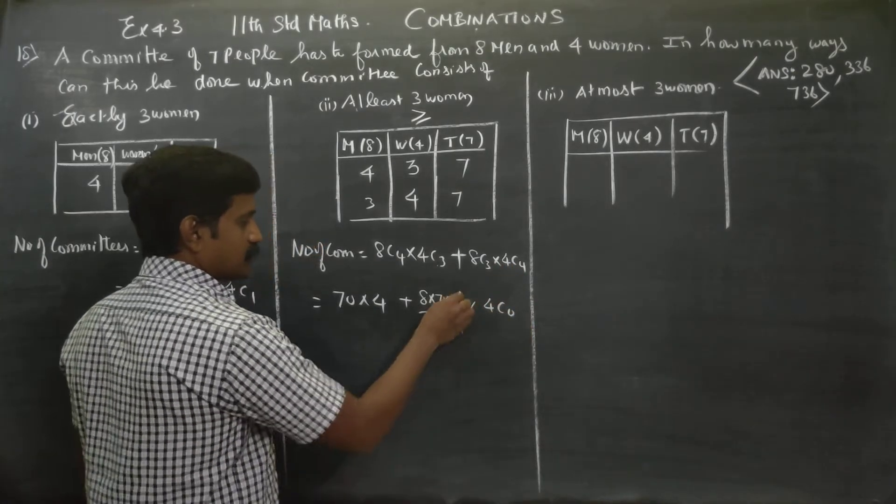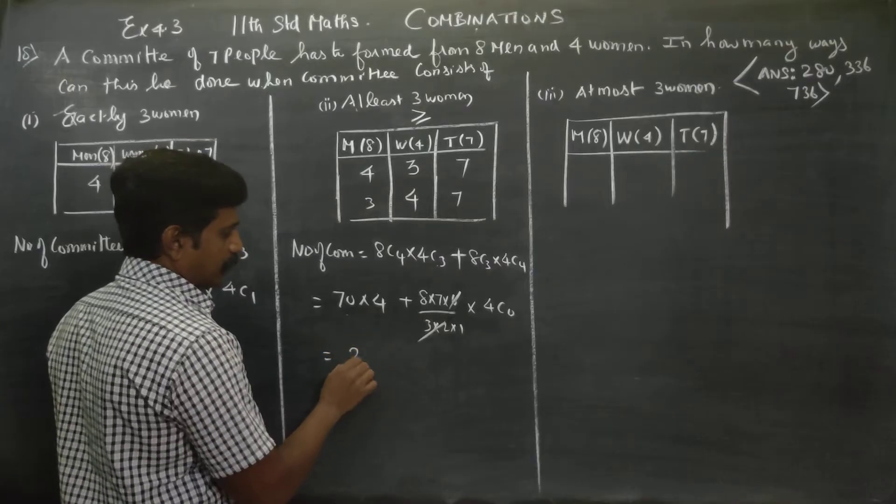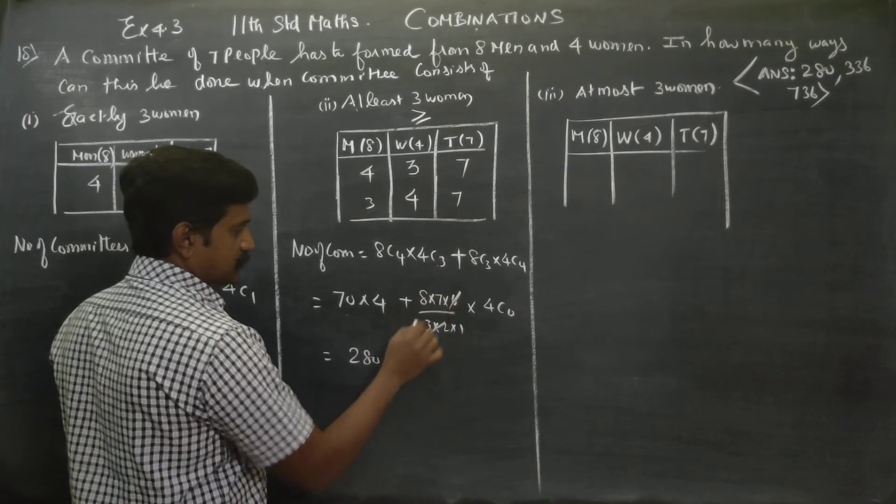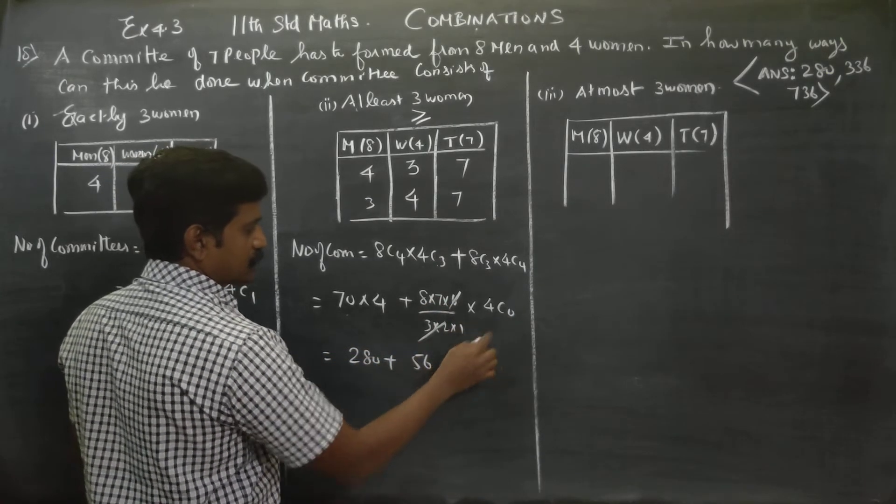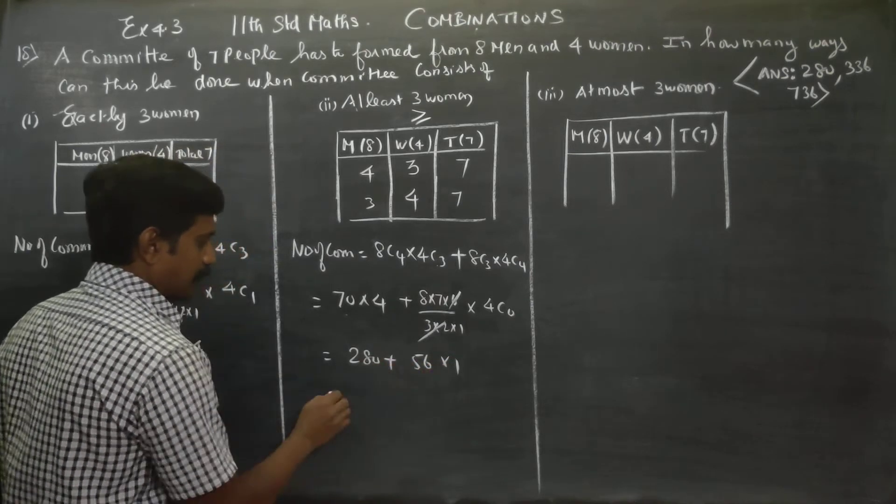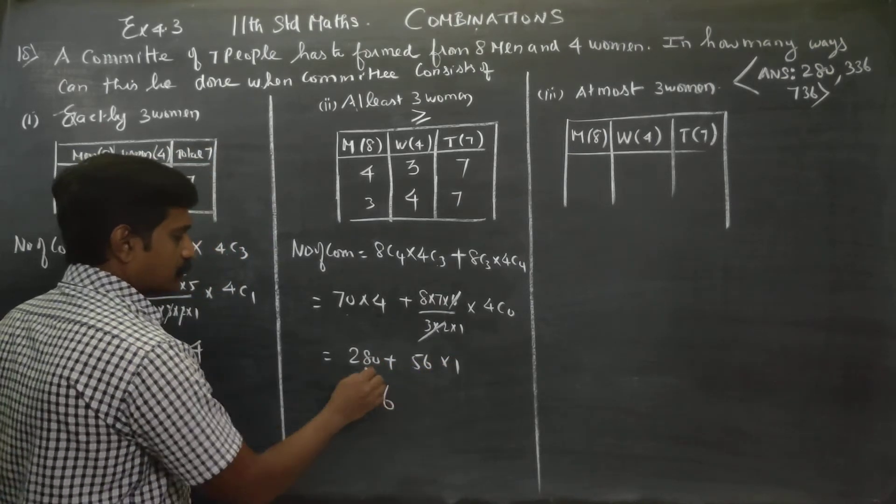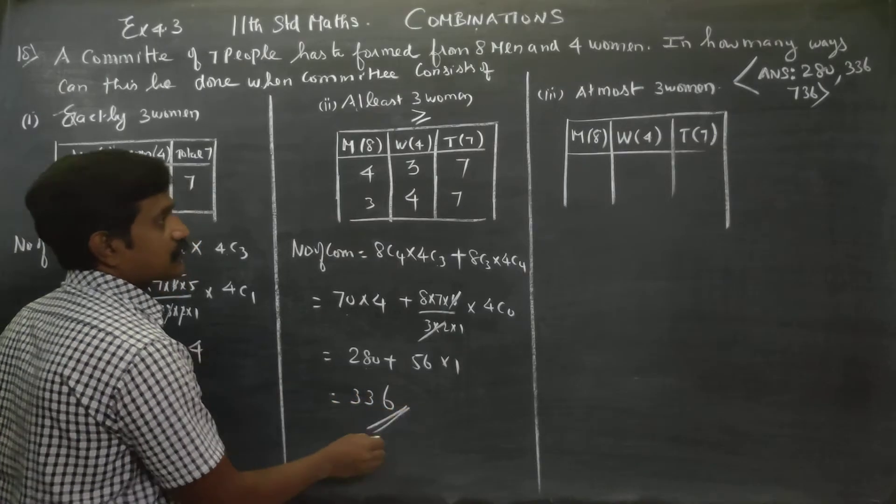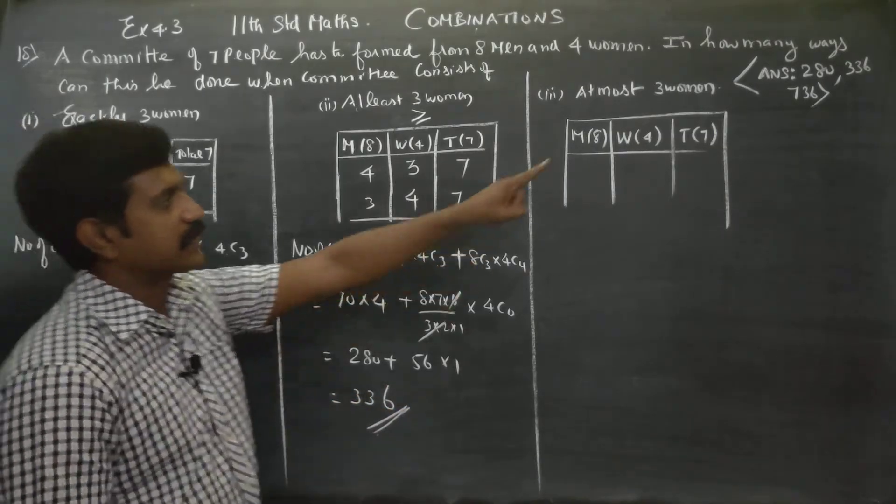4C0 is 1. Three twos are six, cancel. 8 times 7 is 56. 56 times 6 is 336. The answer is 336. That is our second answer.